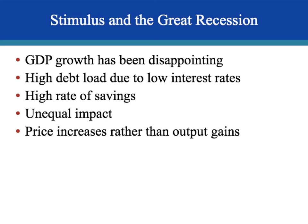The positive benefits of the stimulus were not spread evenly — businesses hardest hit didn't benefit much. Some stimulus spending caused price increases rather than output gains because in the short run supply of some goods was fixed — aggregate demand shifted right but businesses couldn't yet increase output, so the effect was a price increase. Even though the economy was no longer in recession, GDP growth remained disappointing, with high savings rates, lackluster spending, and households still paying off debt. This concludes Chapter 30.